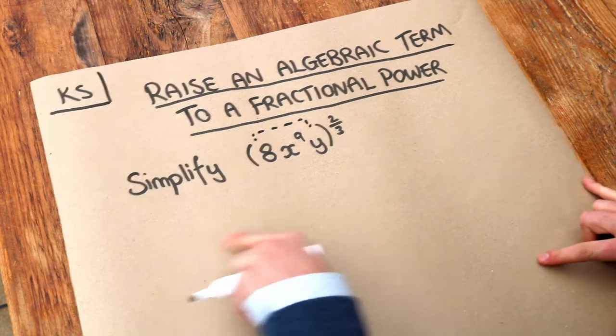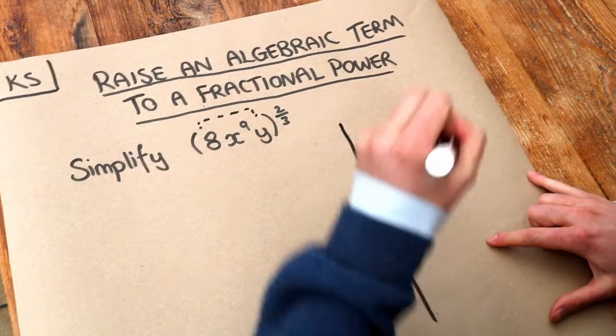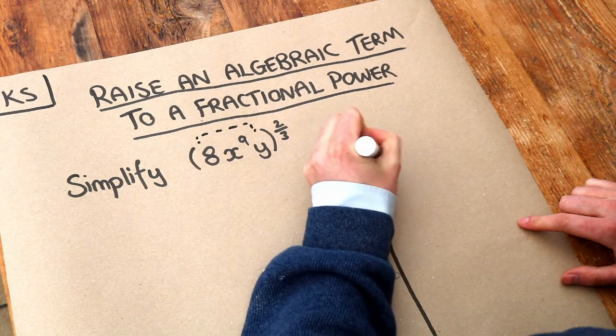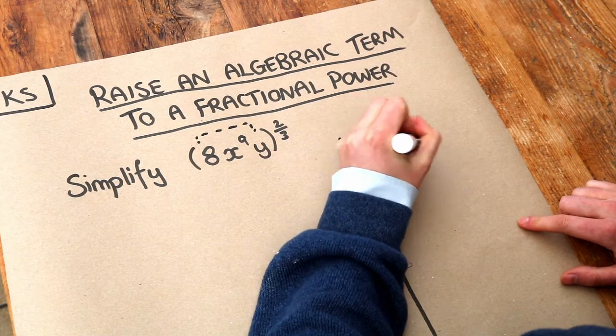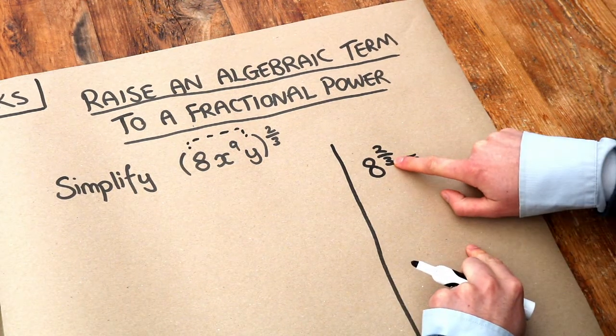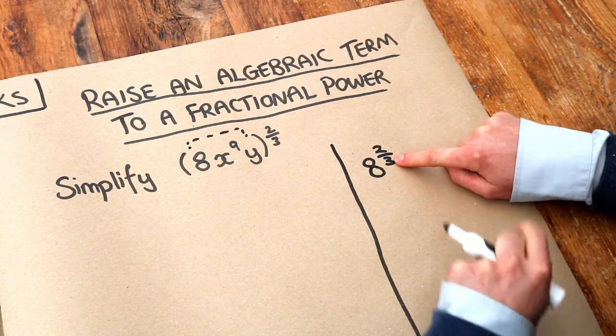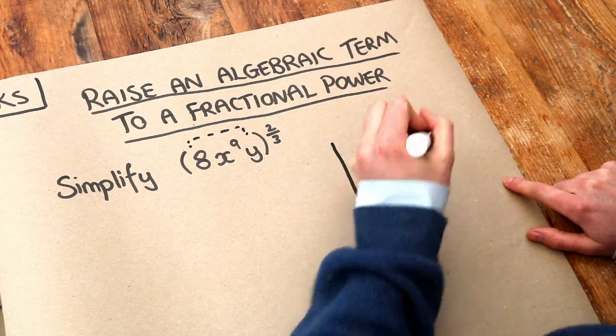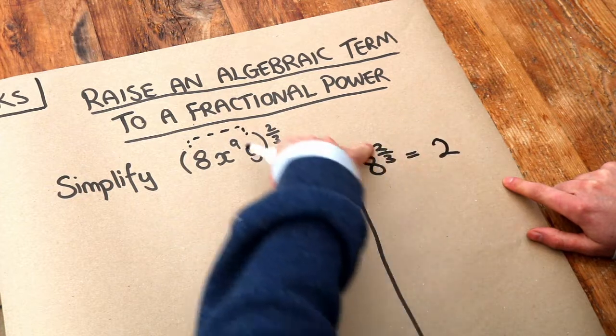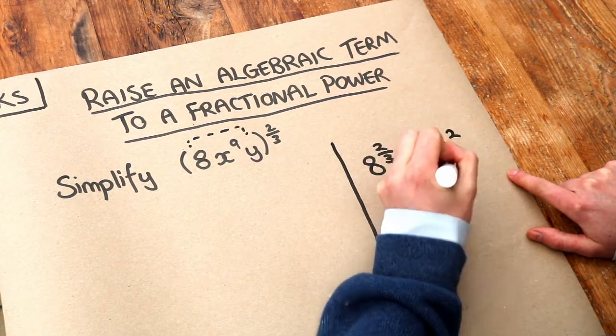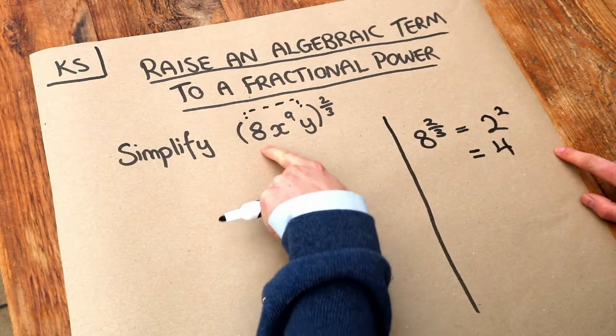Now we could write this all out in one go but let's just work out each bit separately. We want the 8 to the two-thirds. When we have a fractional power like this we first deal with the denominator, and if we've got a 3 there that means we do the cube root of 8. The cube root of 8 is 2, and we've still got that 2 in the numerator of the fractional power, and 2 squared is 4. So this first thing is 4.